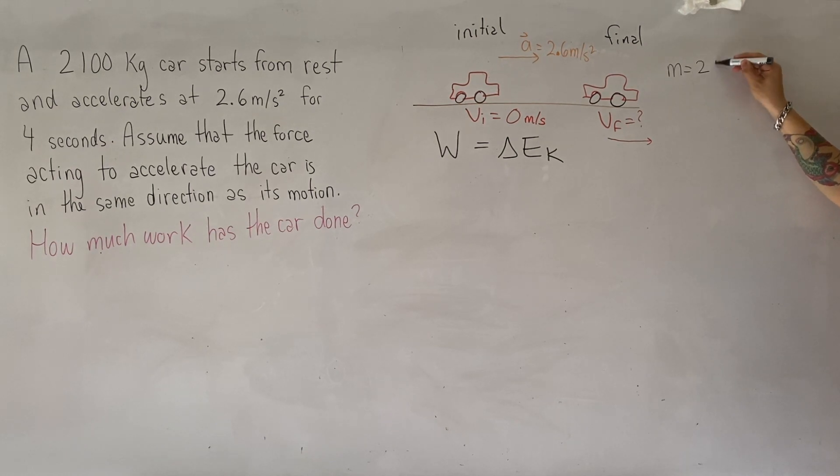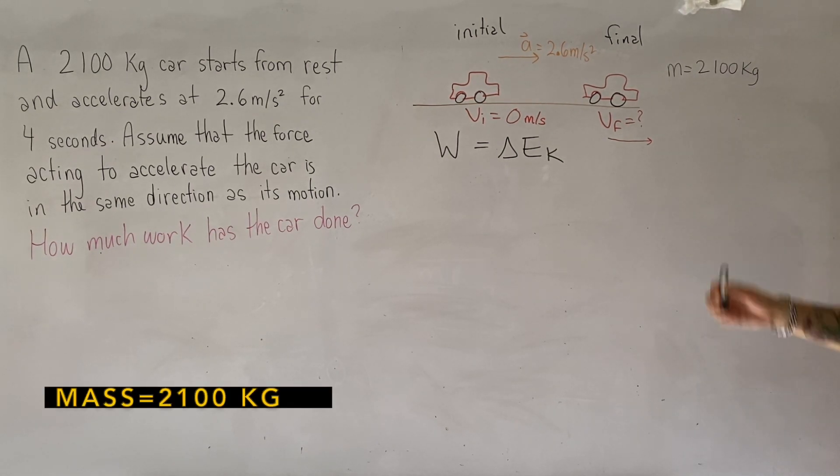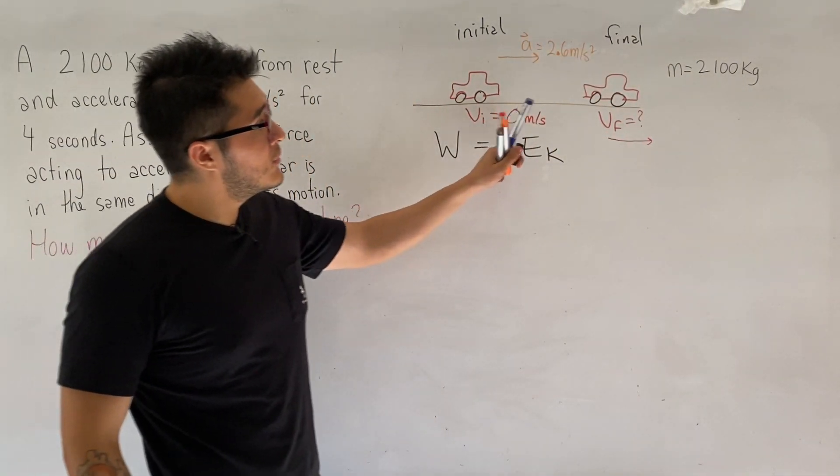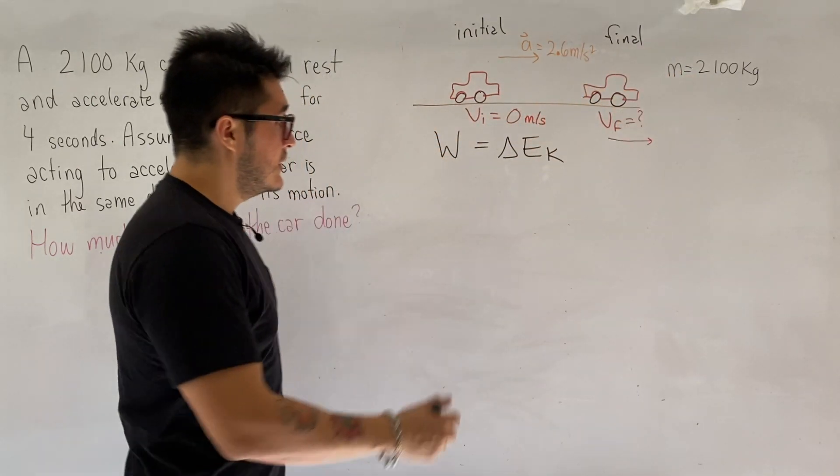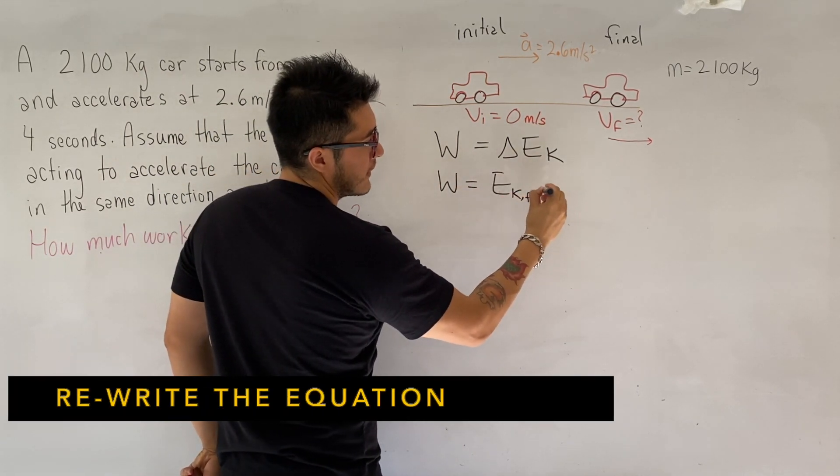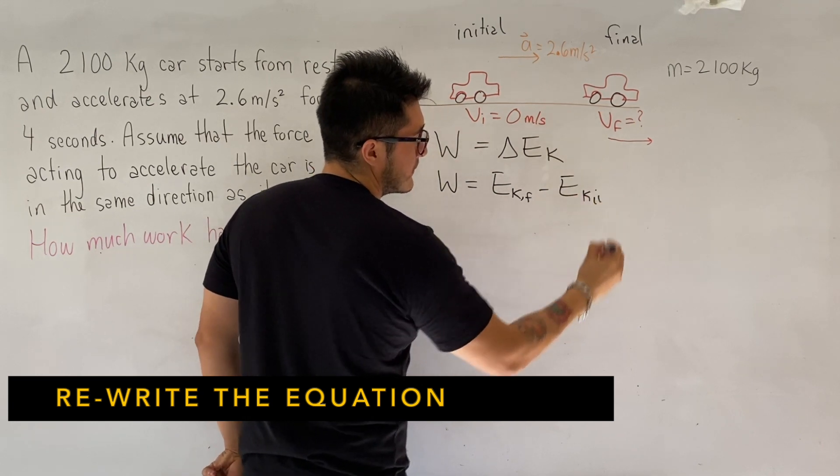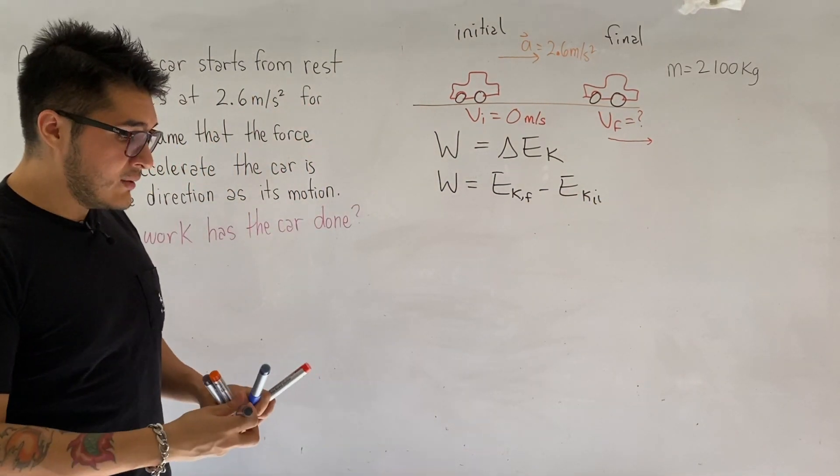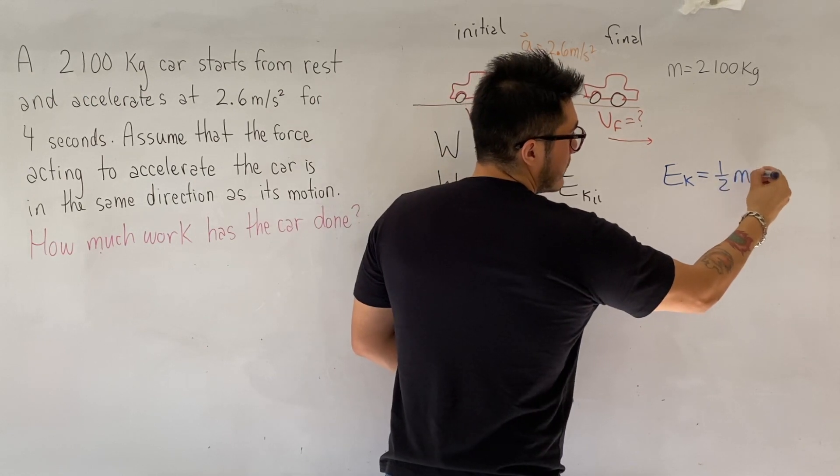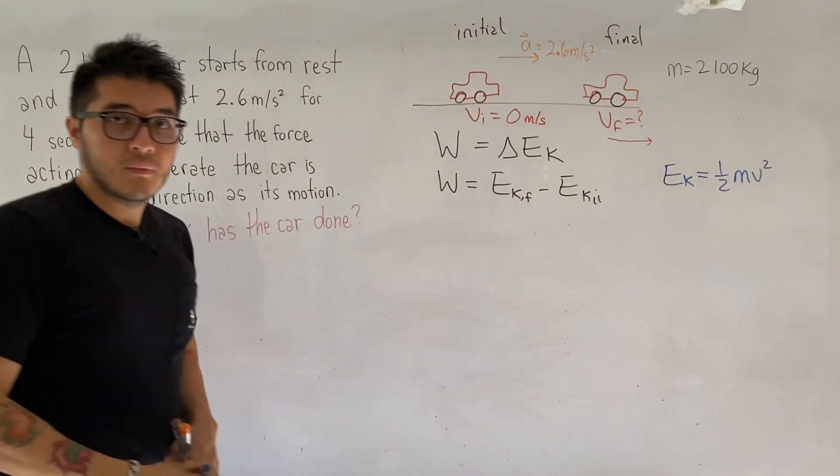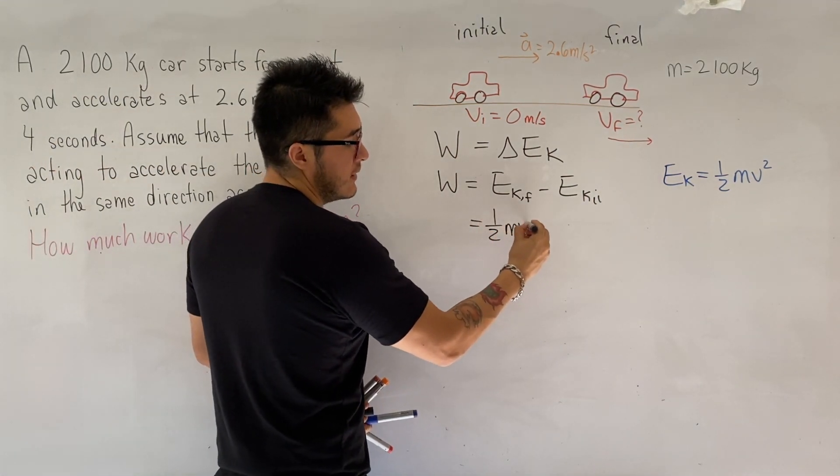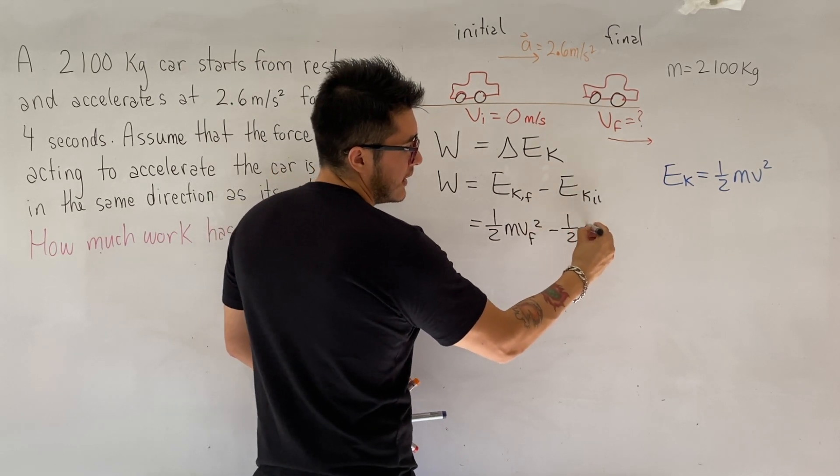So using the work kinetic energy theorem, we don't need to know the forces, all we really need to know is the change in velocities and the mass of the object. So we can rewrite this equation as work equals the final kinetic energy minus initial kinetic energy. And we're going to use the formulas for kinetic energy. Recall, kinetic energy is just ½mv².